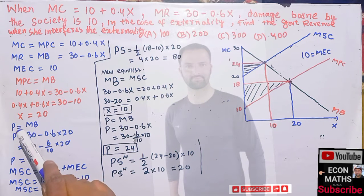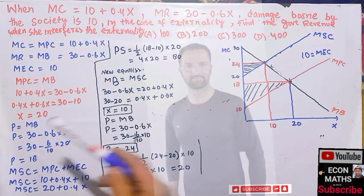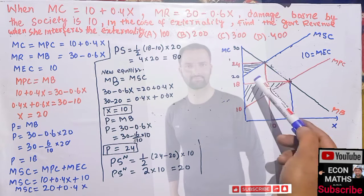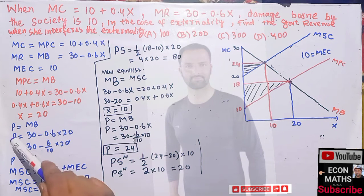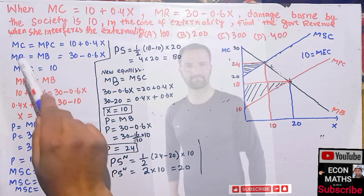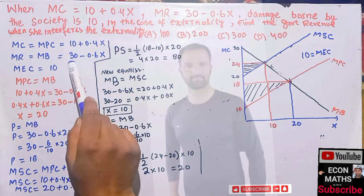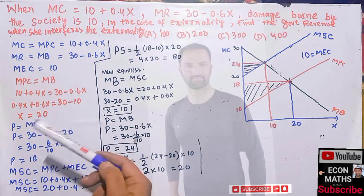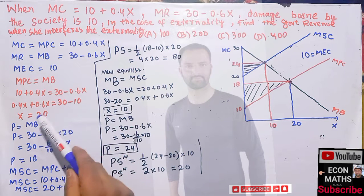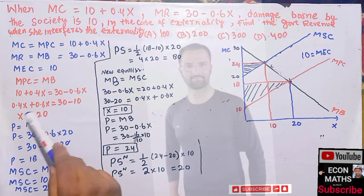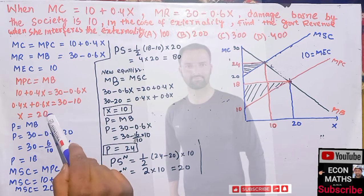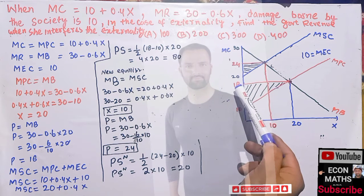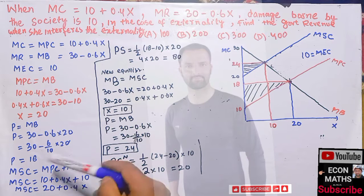Now, what will be our price? Price will be equal to marginal benefit. It will intersect at this point. So P is equal to 30 minus 0.6x. Plugging in x equal to 20, we get the equilibrium price, which is 18.